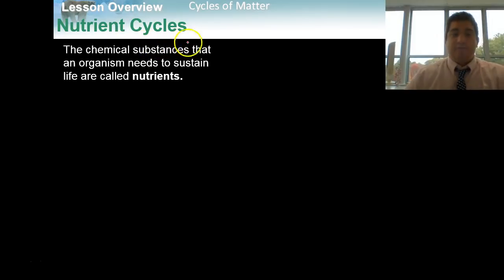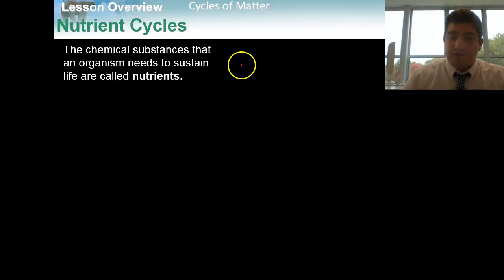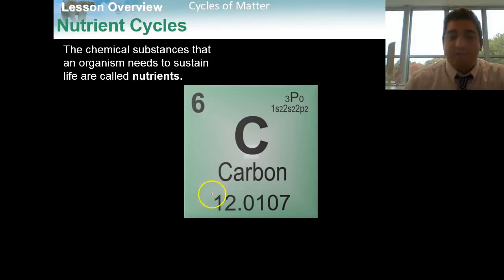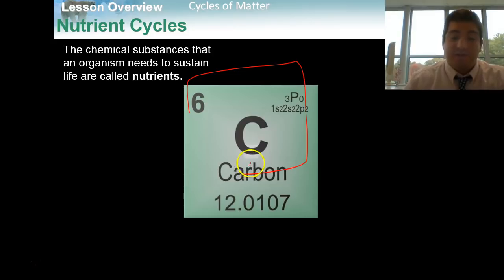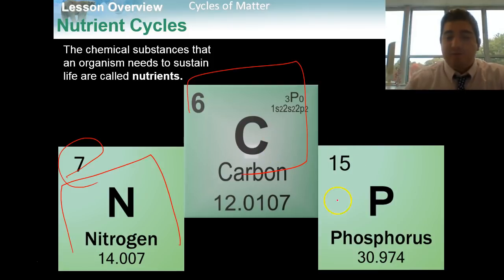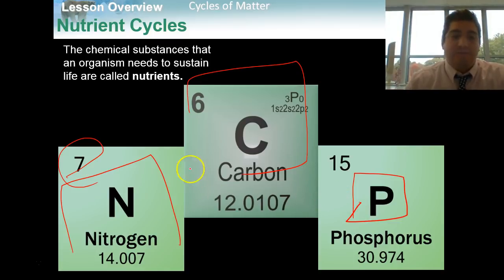The next thing we're going to talk about is nutrient cycles. A nutrient is a chemical substance that organisms need to sustain life — nutrients are what make life possible. Nutrients are based on three important chemicals. The first is carbon, which forms rings and chains and huge molecules essential to life. The next is nitrogen, also important for nutrients. The third is phosphorus. These three chemicals are really important in forming nutrients in the environment.